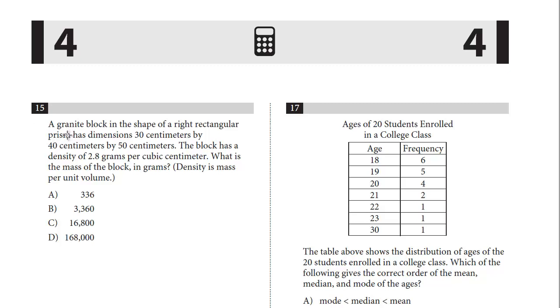Let's take a look at 15. A granite block in the shape of a right rectangular prism has dimensions 30 centimeters by 40 centimeters by 50 centimeters. The block has a density of 2.8 grams per cubic centimeter. What is the mass of the block in grams?